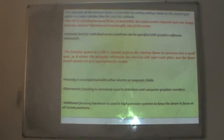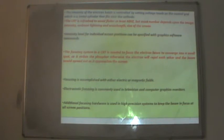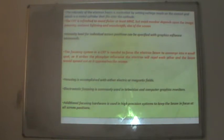The intensity level of individual screen positions can be specified with graphics software commands. The focusing system in a CRT focuses the electron beam into a small spot; otherwise electrons repel each other and the beam spreads out as it approaches the screen. Focusing is accomplished with either electric or magnetic fields. Electrostatic focusing is commonly used in television and computer graphics monitors.